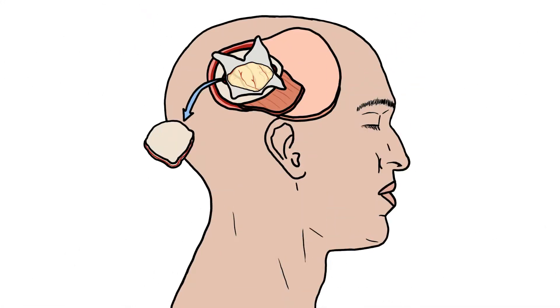Hey guys, it's Layla. Our topic for today is the infratentorial tumors of the cerebellum and the fourth ventricle. Starting with the cerebellum, you have the medulloblastoma — it is the most common malignant tumor in children.